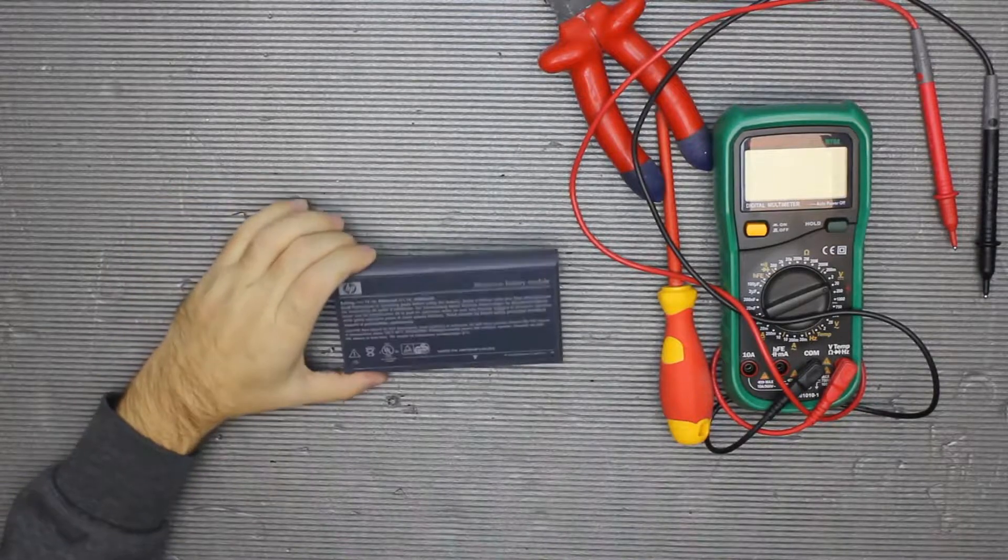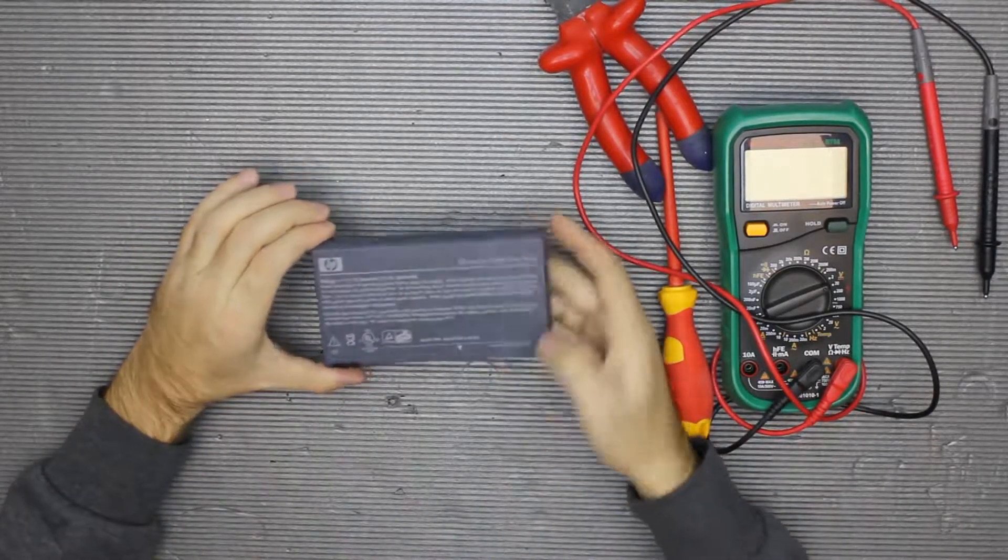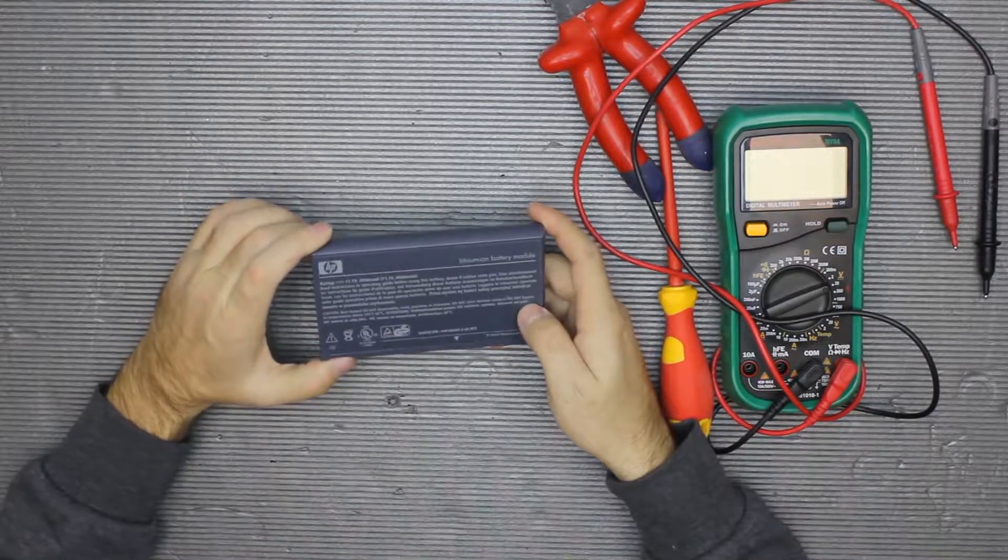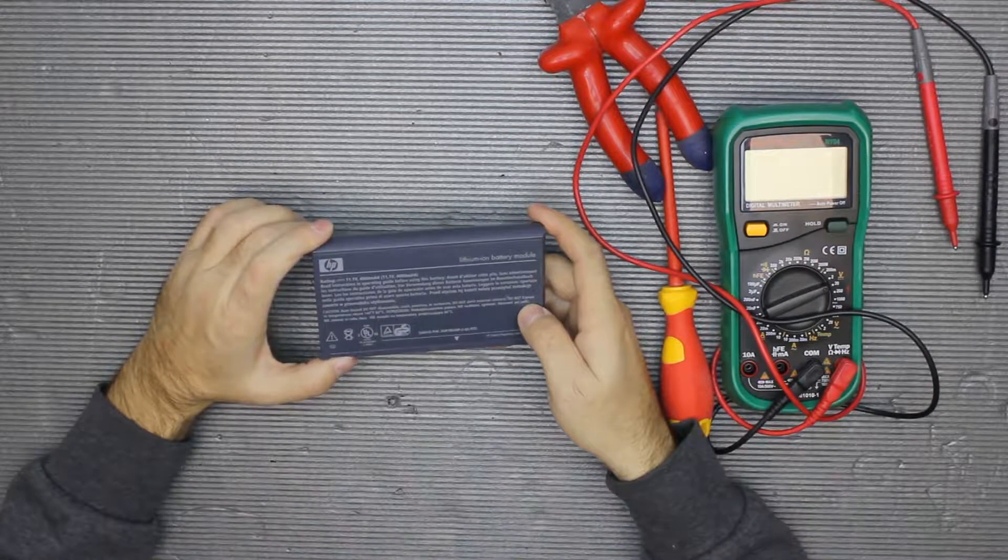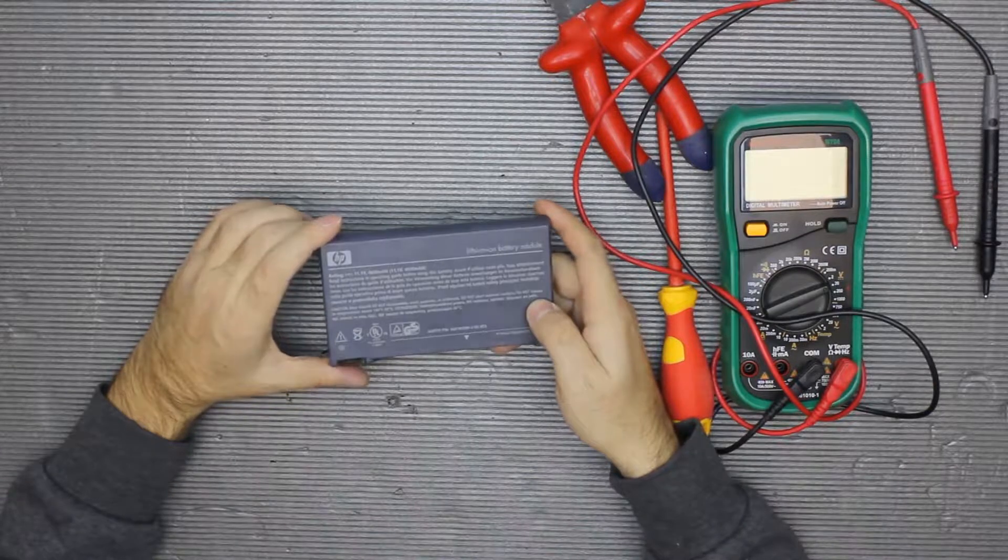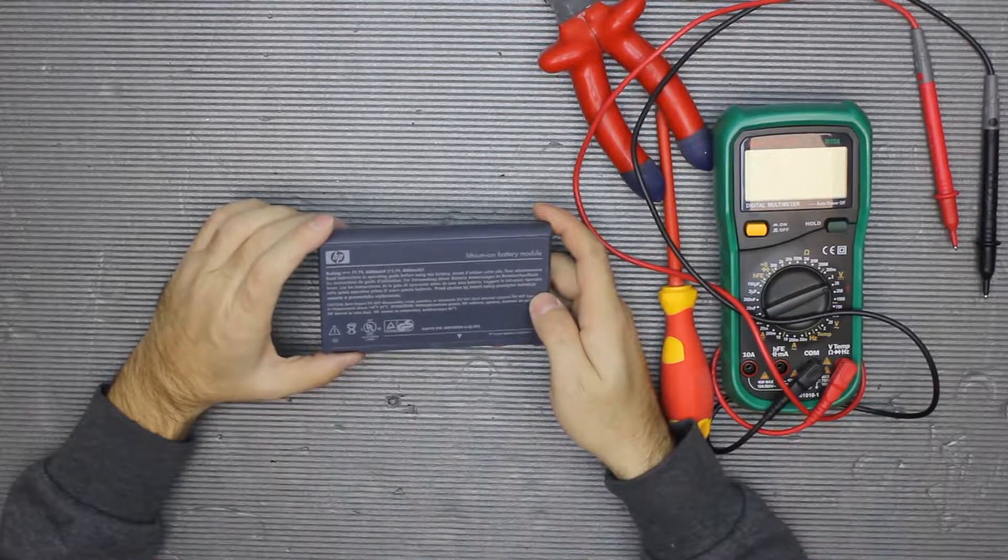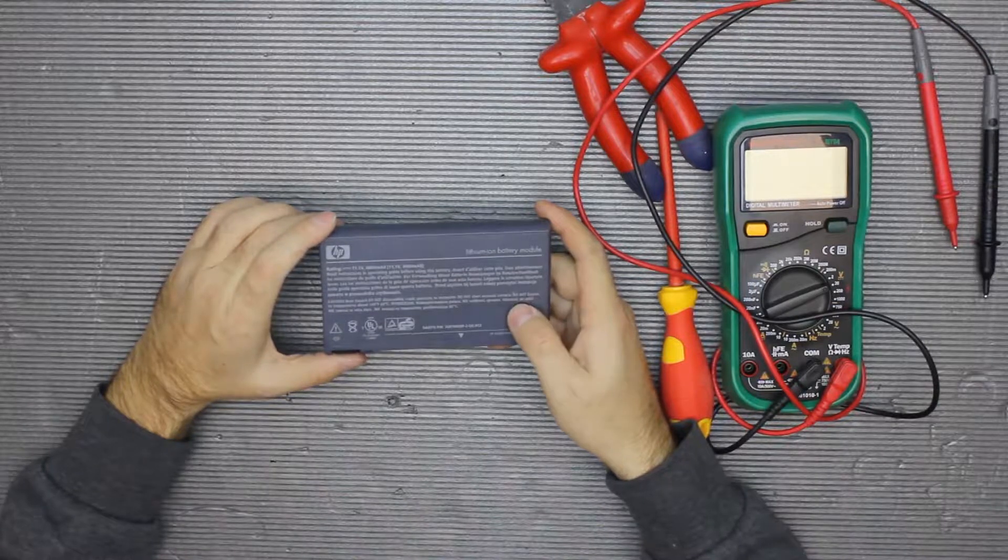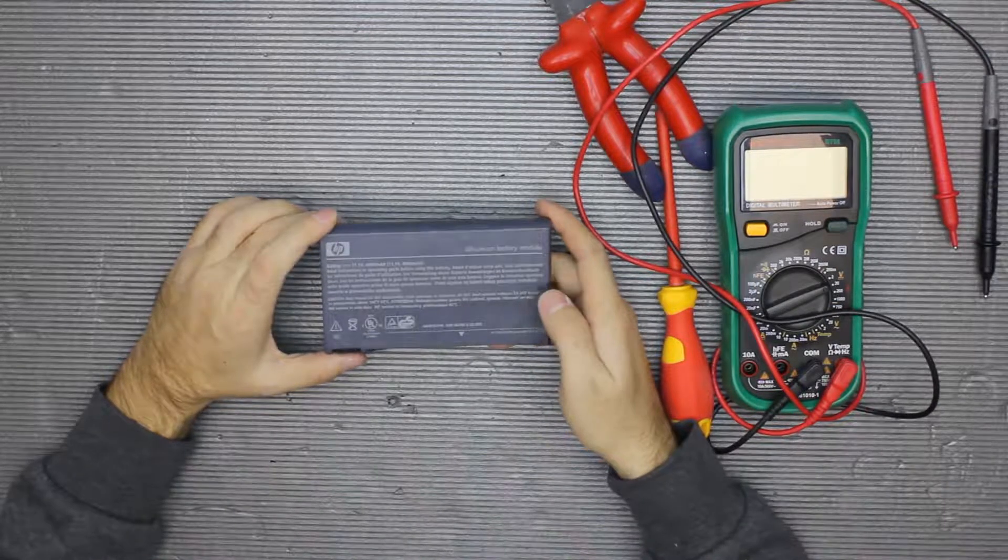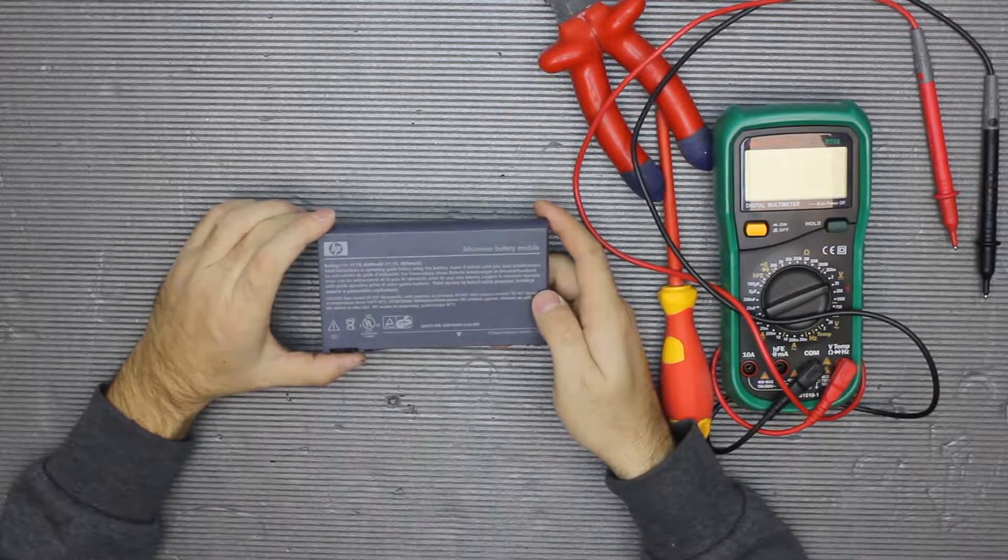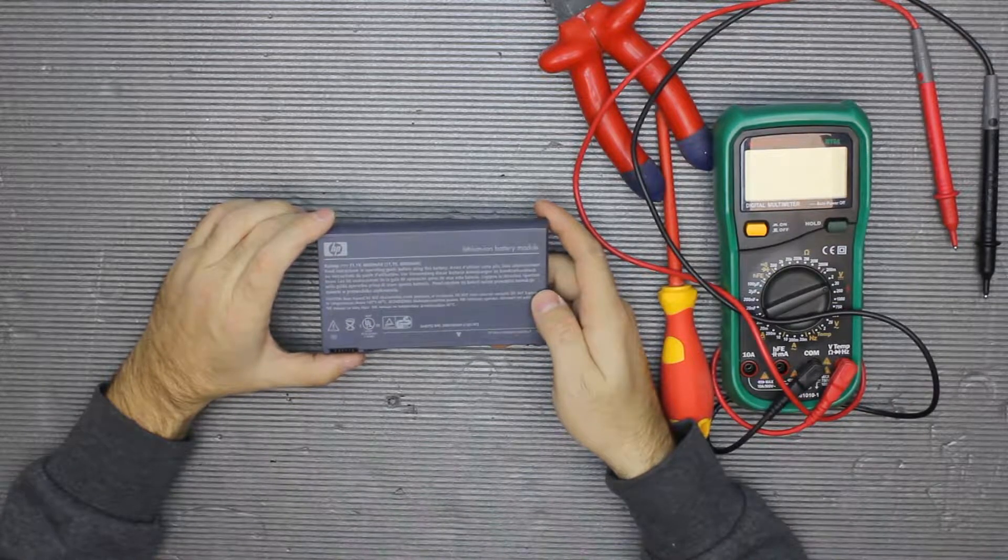Hey guys, today I'm going to tear down one very interesting battery. It's for HP model laptops, but it's actually produced by Sanyo. The part number is quite long, but it's an 11.1 volts, 4 amp hours battery.